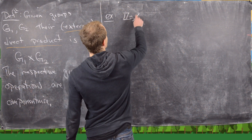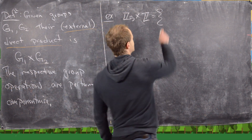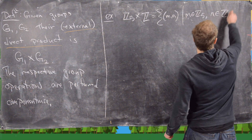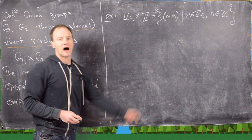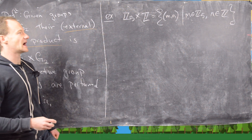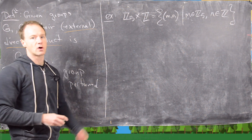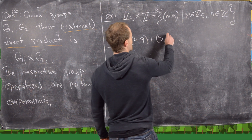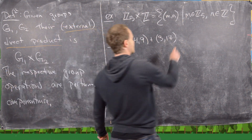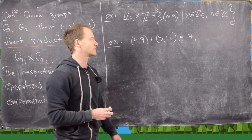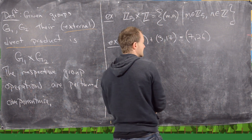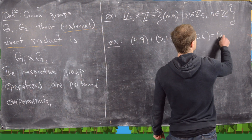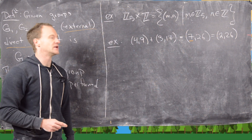Let's look at Z5 cross Z. As a set this is all (m, n) where m comes from Z5 and n comes from the integers. The operation in the first component happens modulo 5 and the operation in the second component is just normal addition of integers. For example, (4, 9) plus (3, 17) gives us (7, 26), but in the first component we're working modulo 5, so we replace 7 with 2, giving us (2, 26).